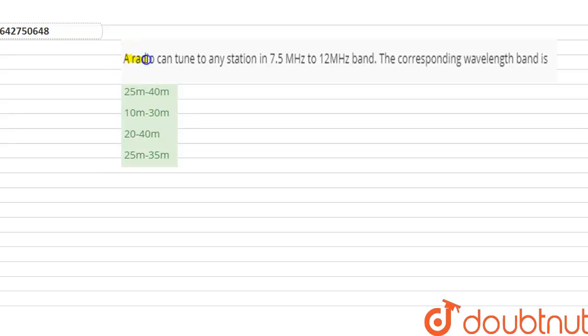Hello students, our question is a radio can tune to any station in 7.5 MHz to 12 MHz band. The corresponding wavelength band is.